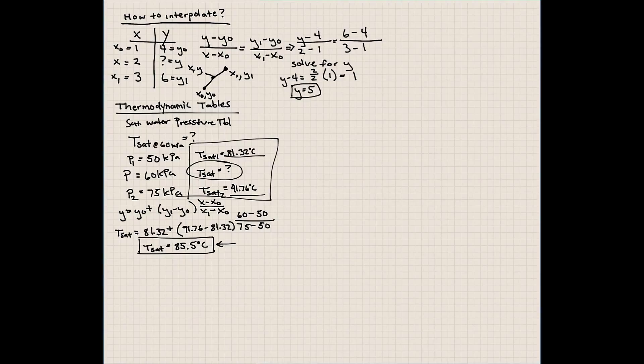It can't be above that, can't be below that, since we're assuming it's a positive linear slope between those values. As we increase the pressure, the saturation temperature was also increasing, so it had to be between those two values. If you did this calculation in class, a good check for you is to make sure it's somewhere in between 81.32 and 91.76.